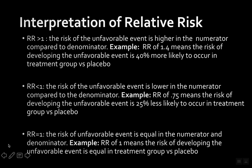A relative risk of 1 means the risk of the unfavorable event is equal in the numerator and denominator. It doesn't matter which group is the numerator — whether it's the treatment group or the placebo group — it's a 1-to-1 ratio, so you'll get 1 regardless.